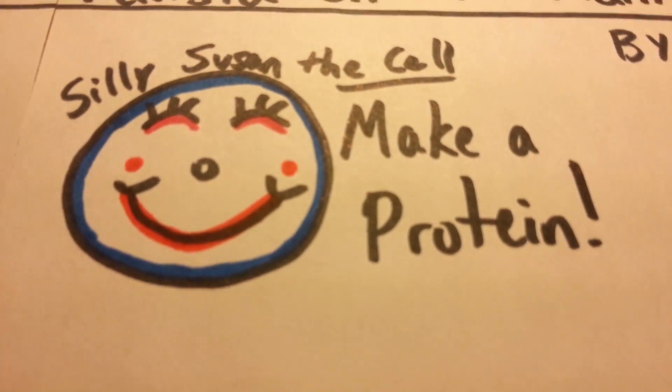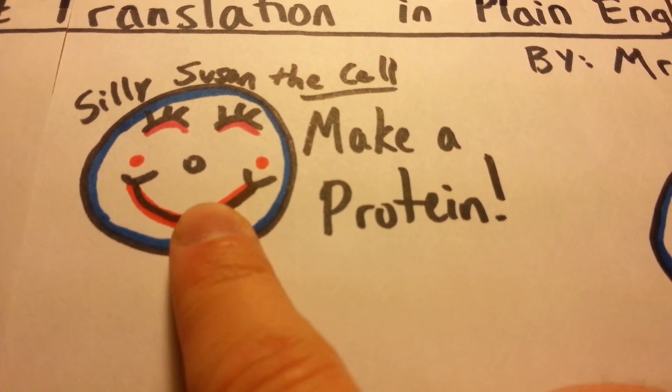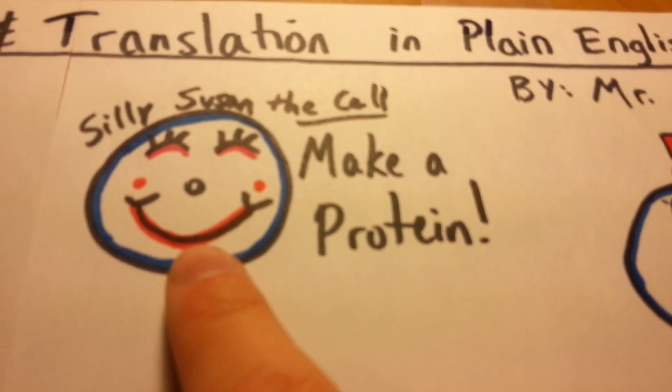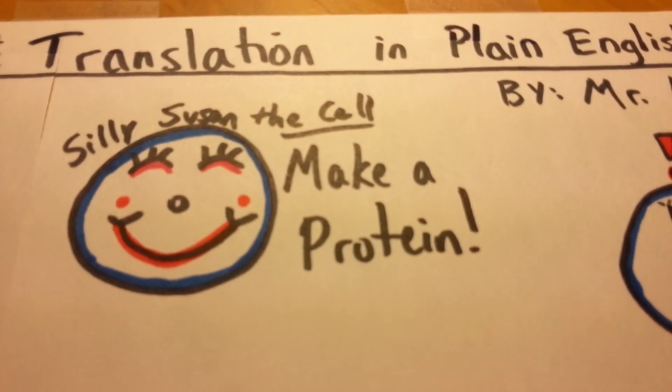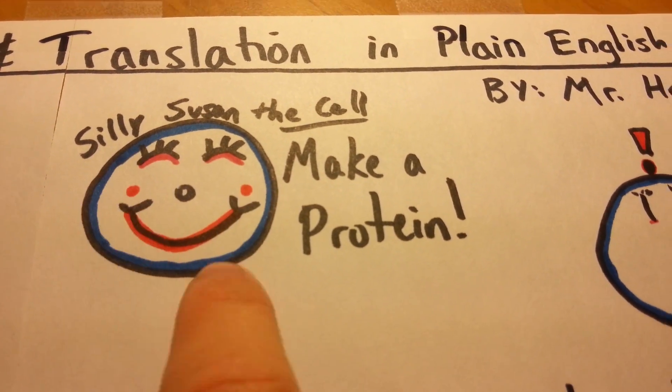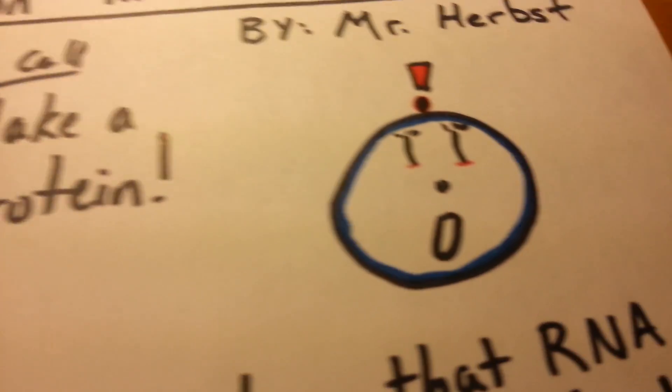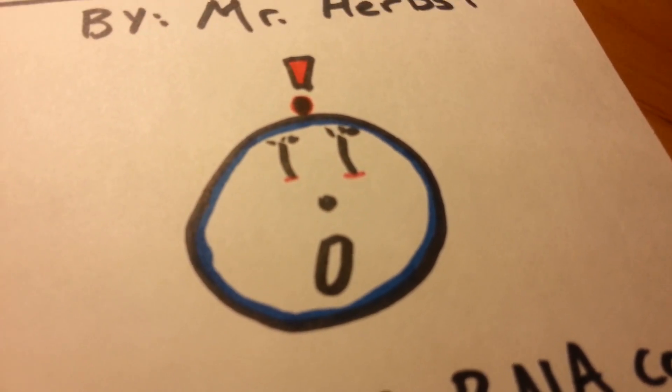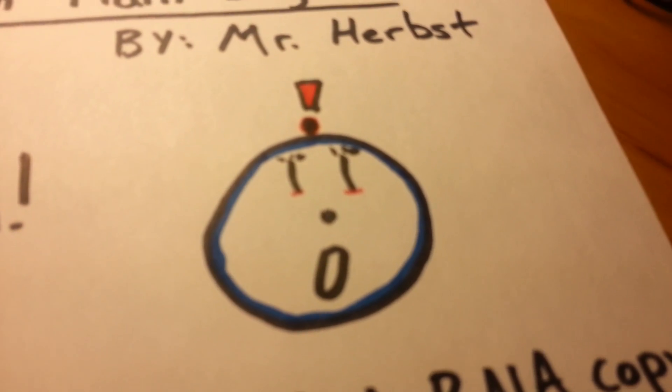Now, our story begins right here with silly Susan the Cell. Look how happy she is. You know why she's so happy? Because today she gets to make a protein. So she's going to use her DNA to make a protein. But whoa, watch out! She doesn't actually know how to do that. So let's see if we can help her out a little bit.